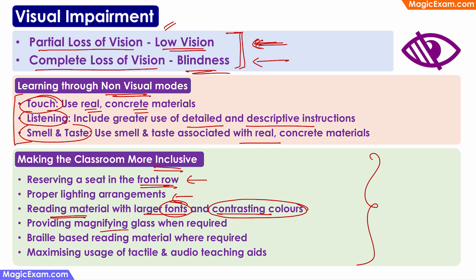We should be able to provide basic equipment such as a magnifying glass wherever required. Braille-based reading material should also be made available wherever possible. We should also maximize the usage of tactile and audio teaching aids — tactile meaning material which children can touch, feel, and experience. Audio teaching aids should also be used wherever possible to make learning possible for children with low vision or blindness.